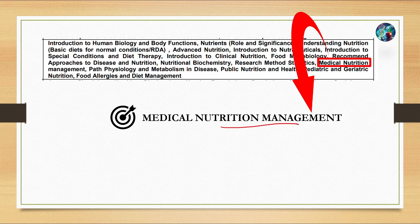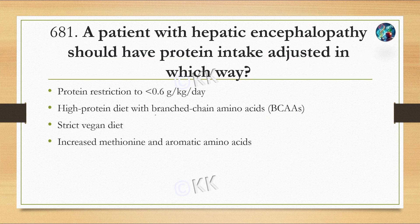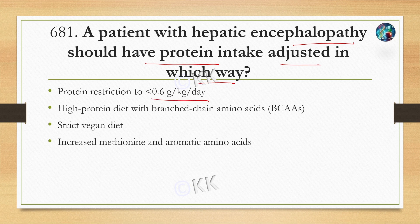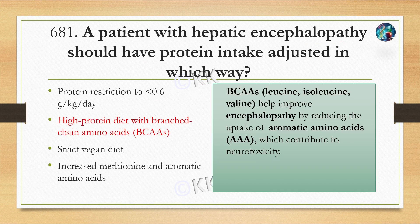First question: a patient with hepatic encephalopathy should have protein intake adjusted in which way? Option A: protein restriction to less than 0.6 gram per kg per day. Option B: high protein diet with branched-chain amino acids. Option C: strict vegan diet. Option D: increased methionine and aromatic amino acids. The correct option is B.